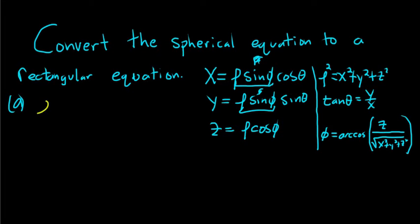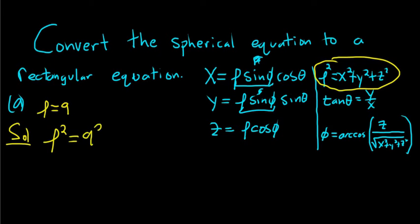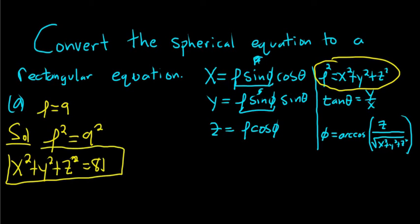So the first example will be ρ equals 9. This is simply a sphere in spherical coordinates. We want to convert this to rectangular, so I guess we have to use this formula here. We'll start by squaring both sides of our equation. So ρ squared is equal to 9 squared. Then we know ρ squared is x squared plus y squared plus z squared, and that's equal to 9 squared, which is 81. And then this is the equation of a sphere in rectangular coordinates.